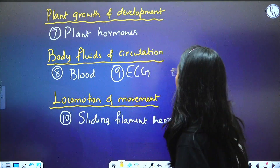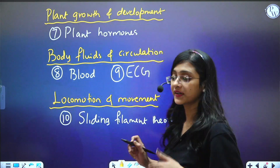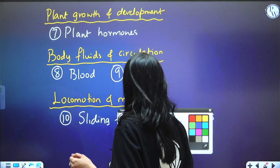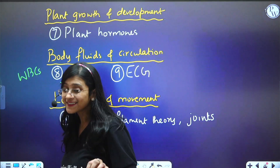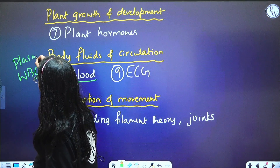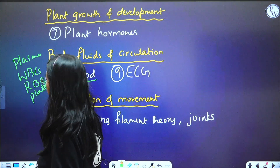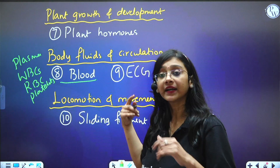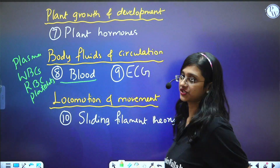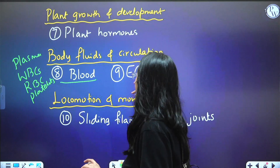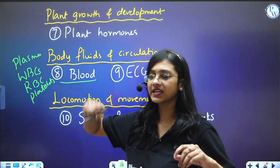Next, Body Fluids and Circulation from Class 11 Zoology — questions are coming from blood. This includes different types of WBCs, proteins present in plasma, RBCs, platelets, blood clotting, and blood grouping. Questions will be asked collectively from all these areas. Also, questions are asked continuously from ECG — based on the graph, what P wave, QRS wave, and T wave each represent. All of this you should know well.